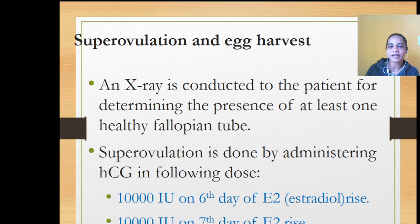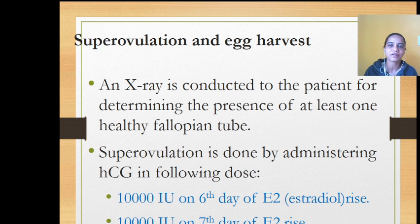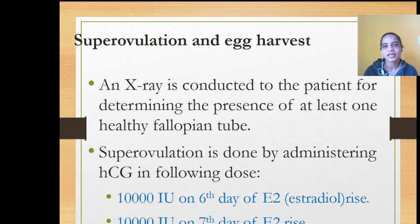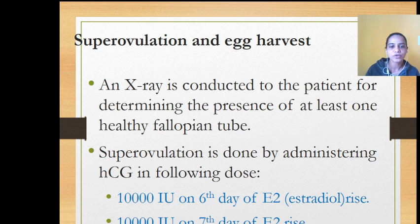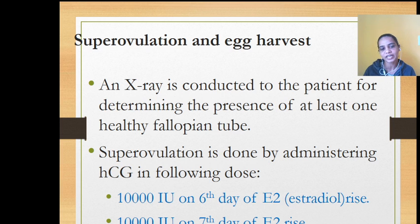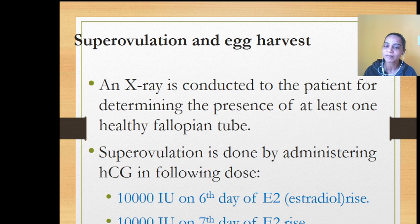Super ovulation is induced by administering HCG — human chorionic gonadotropin. A dosage of 10,000 IU (international units) is given on the sixth day of E2 rise. E2 refers to estradiol, which is one of the three forms of estrogen: estrone, estradiol, and estriol. A further dosage of 10,000 IU of HCG is also given on the seventh day of E2 rise.